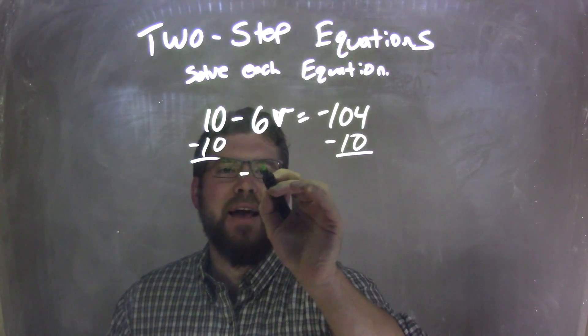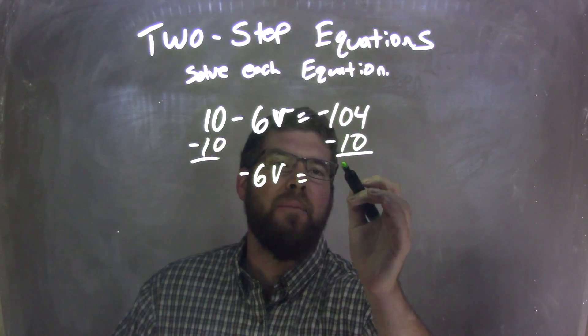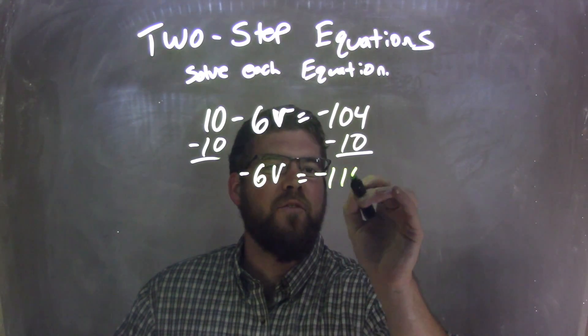We're left with negative 6V. These 10s cancel. Equals, well, negative 104 minus 10 is like adding a negative 10. It's negative 114.